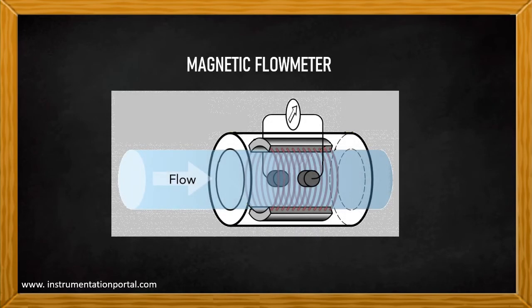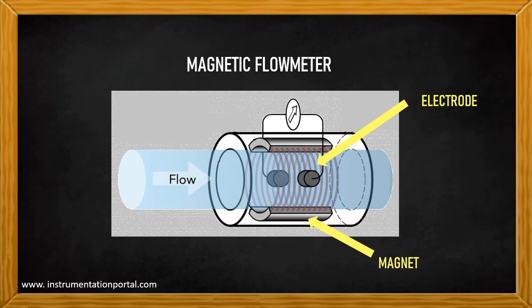Magnetic flow meter is a volumetric flow meter which does not have parts in the flow stream. It has a magnet and electrode, but outside of the flow stream section. Hence, magnetic flow meter does not have obstruction parts.